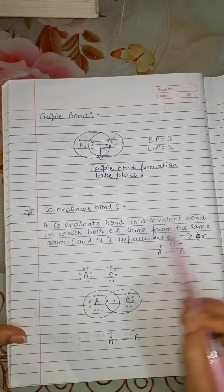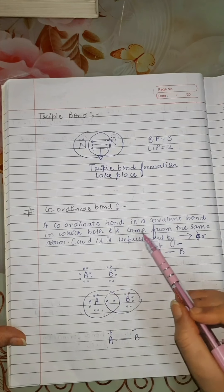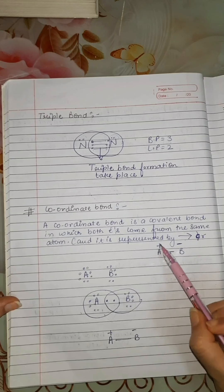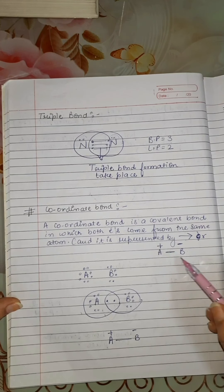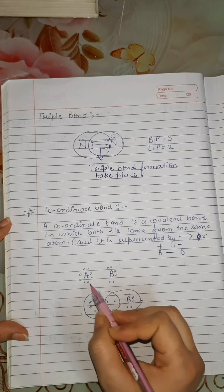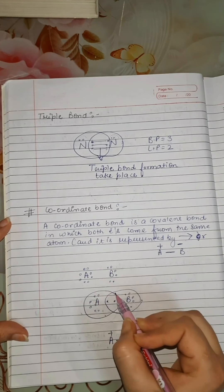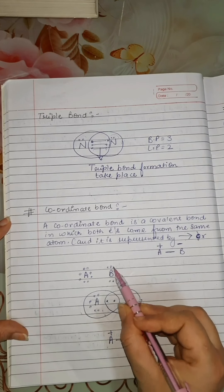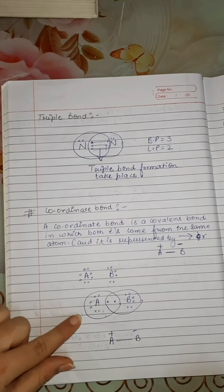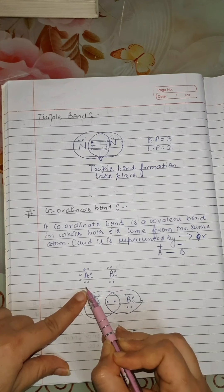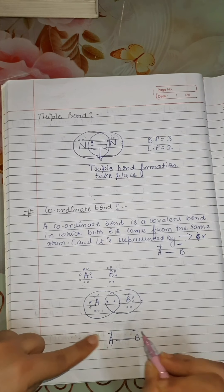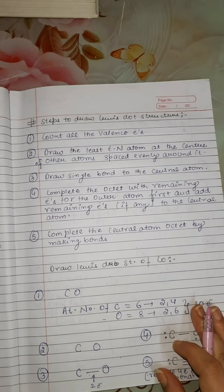Now let's understand what we mean by a coordinate bond. A coordinate bond is a covalent bond in which both electrons come from the same atom. It is represented by an arrow, or written as A⁺→B⁻. In this, atom A has a complete octet whereas atom B has an incomplete octet. So B needs two electrons to complete its octet. A shares its two electrons with B. Since the electrons come from A, it acquires a positive charge, and B, which gains the electrons, acquires a negative charge.